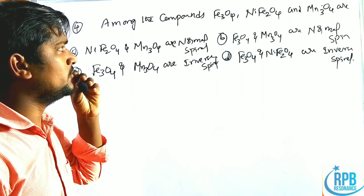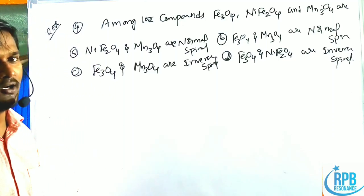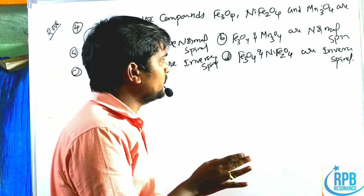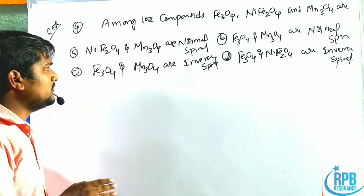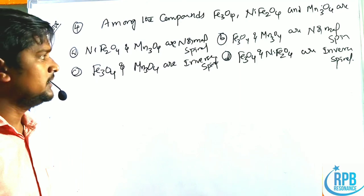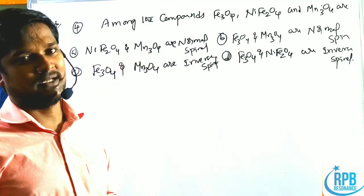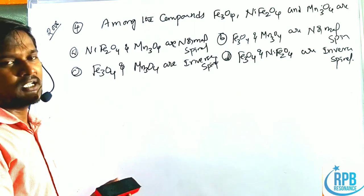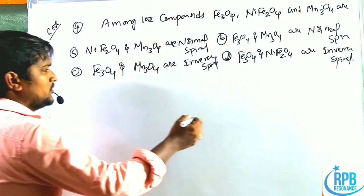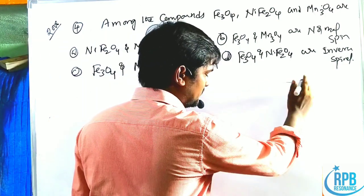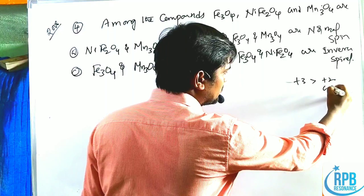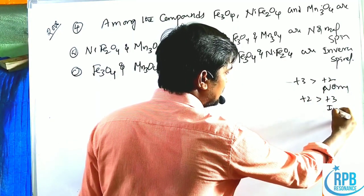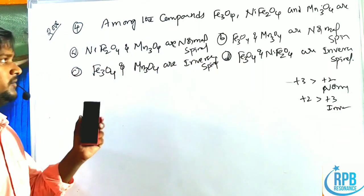Now the fourth problem from 2014 GATE: among Fe₃O₄, NiFe₂O₄, and Mn₃O₄, the options ask which are normal or inverse spinels. Recall: if B³⁺ CFSE > A²⁺ CFSE, it is normal spinal; if A²⁺ CFSE > B³⁺ CFSE, it is inverse spinal.